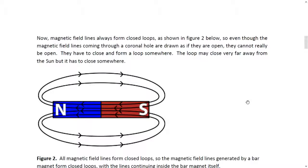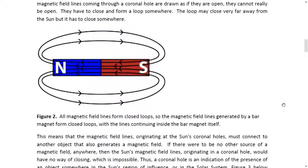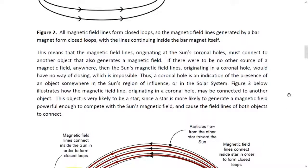We're going to start talking about some of the magnetics and the magnetic field lines of the sun. It states that magnetic field lines always form a closed loop as shown in figure 2. So even though the magnetic field lines coming through a coronal hole are drawn as if they are open, they cannot really be open. What we're basically getting at is we're trying to make a connection between what is occurring on the sun and what is creating all of these coronal holes.